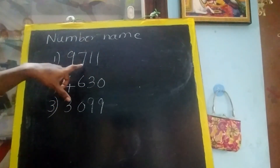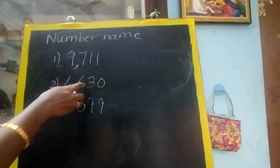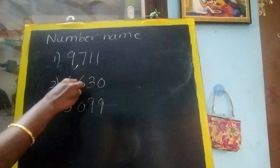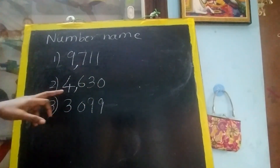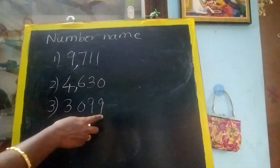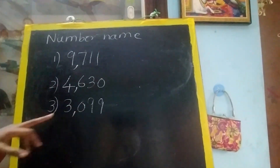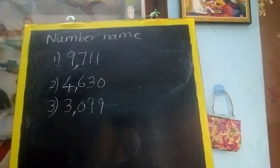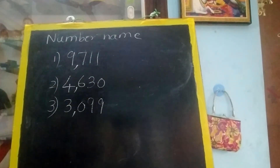Here also, from the last 3 digits, put a comma. 4,630 — here also. 3,099. So this will make it very easy.